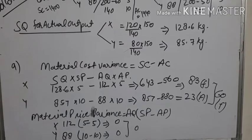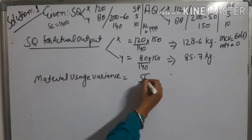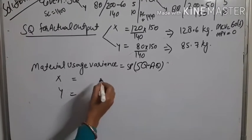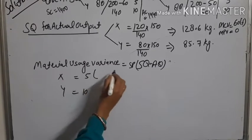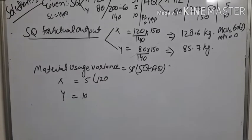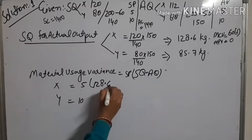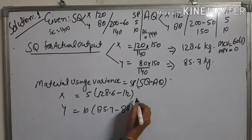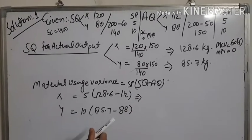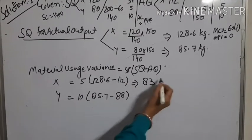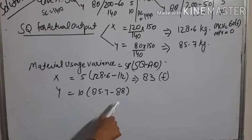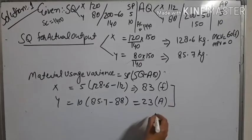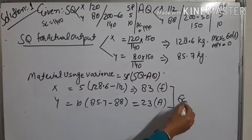Now we calculate material usage variance. The formula is: (standard quantity minus actual quantity) multiplied by standard price, for material X and Y. Standard price is 5 for X and 10 for Y. Standard quantity changed to 128.6 for X and 85.7 for Y, minus actual quantity 112 for X and 88 for Y. For X: (128.6 − 112) × 5 = 83 favorable. For Y: (85.7 − 88) × 10 = 23 adverse. Net total is 60 favorable.